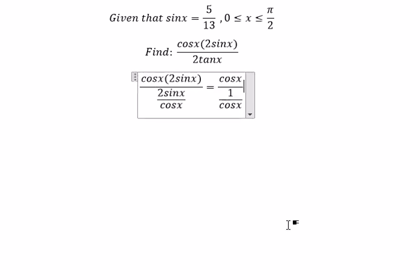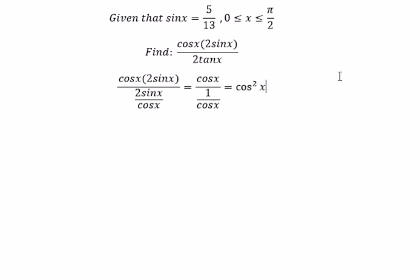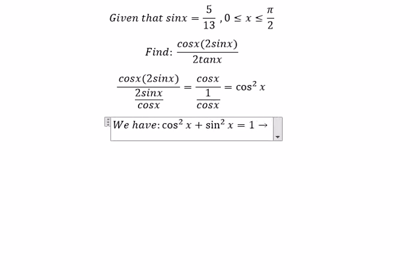This equals cosine squared x. Now we have cosine squared x plus sin squared x equals 1. We want to find the value of cosine squared x, so we get 1 minus sin squared x.